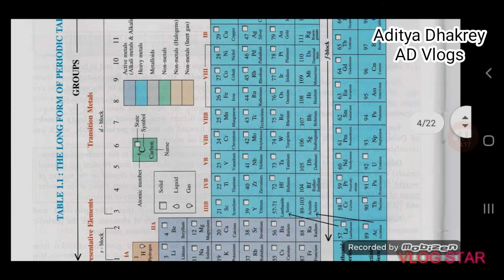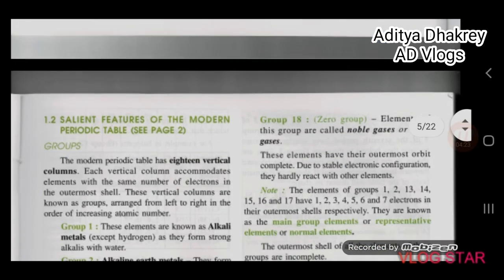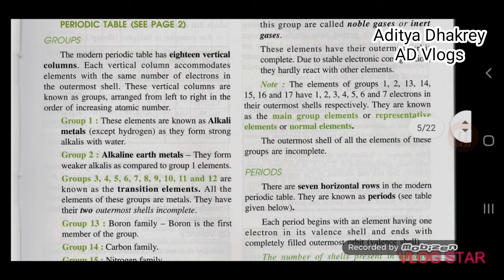This is the long form of the periodic table of elements. The salient features of the modern periodic table — Groups: The modern periodic table has 18 vertical columns. Each vertical column contains elements with the same number of electrons in the outermost shell. These vertical columns are known as groups. They are arranged from left to right in the order of increasing atomic number.